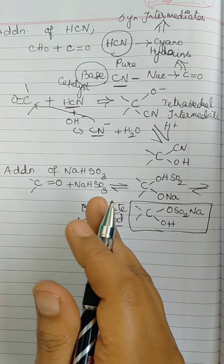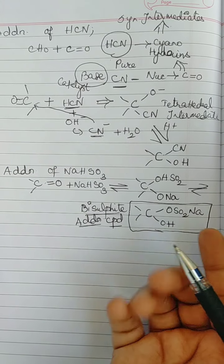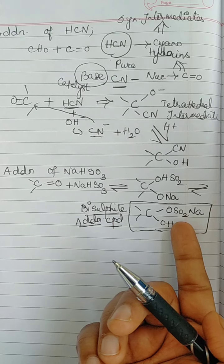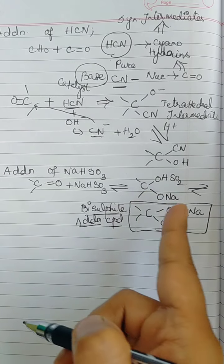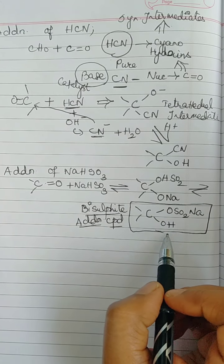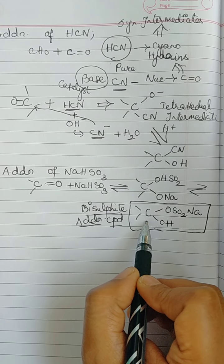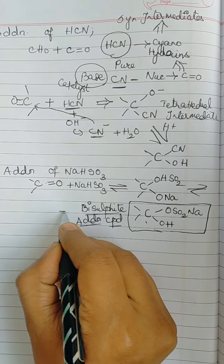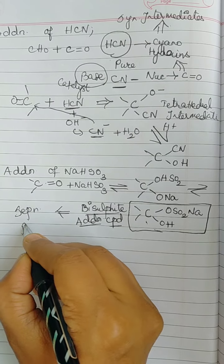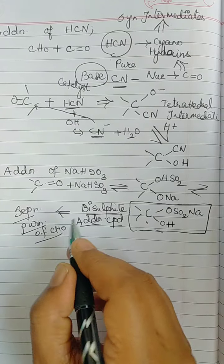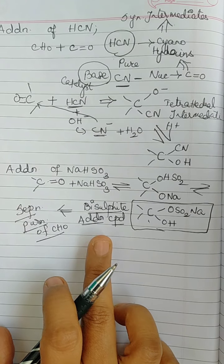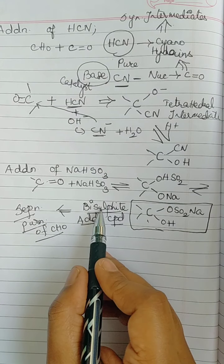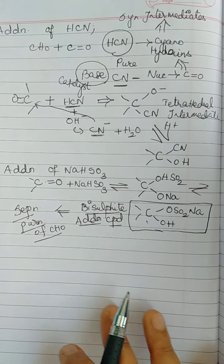When looking at the equilibrium position, it lies towards the right-hand side for aldehydes, and towards the left-hand side for ketones due to steric reasons. The bisulfite addition product is water soluble, and can be converted back to the carbonyl compound by treatment with mineral acid or alkali. These addition compounds are therefore used for separation and purification of aldehydes.